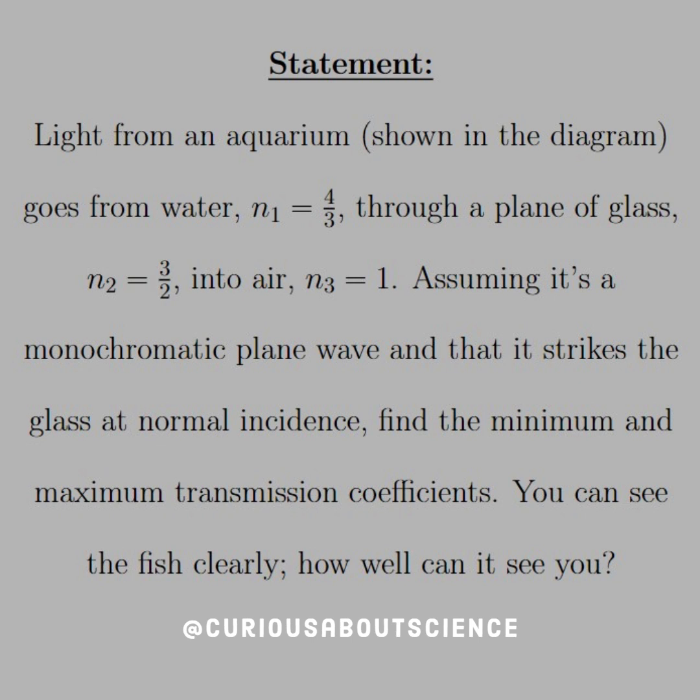which is four-thirds, through a plane of glass, N2 equal 3 over 2, and into air, N3 equal 1. Assuming it is a monochromatic plane wave that strikes the glass at normal incidence, find the minimum and maximum transmission coefficients. You can see the fish clearly. How well can it see you?